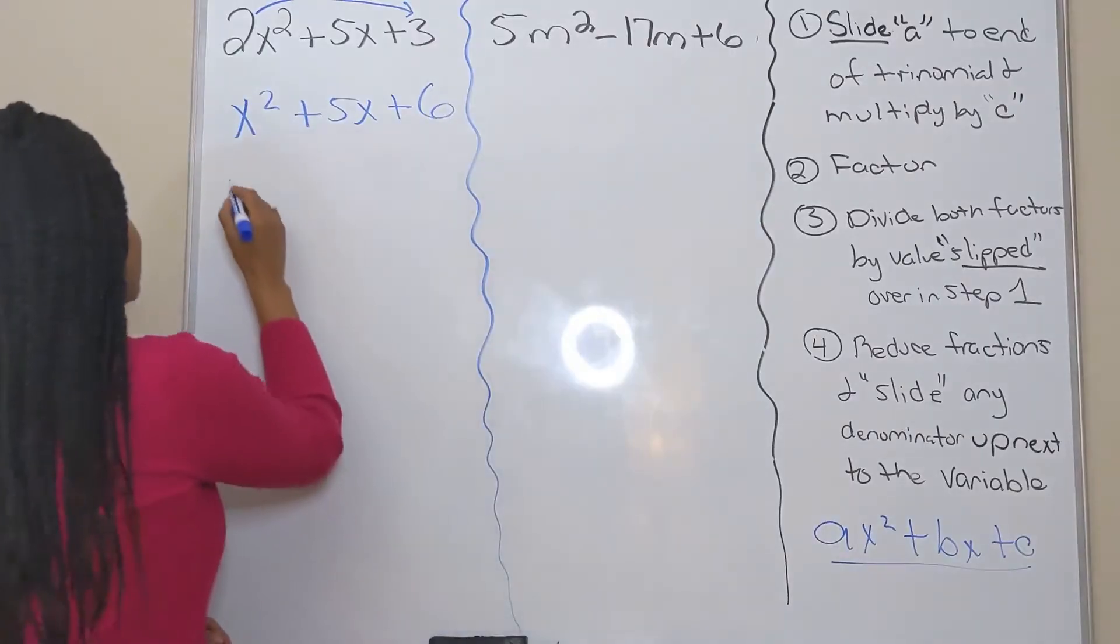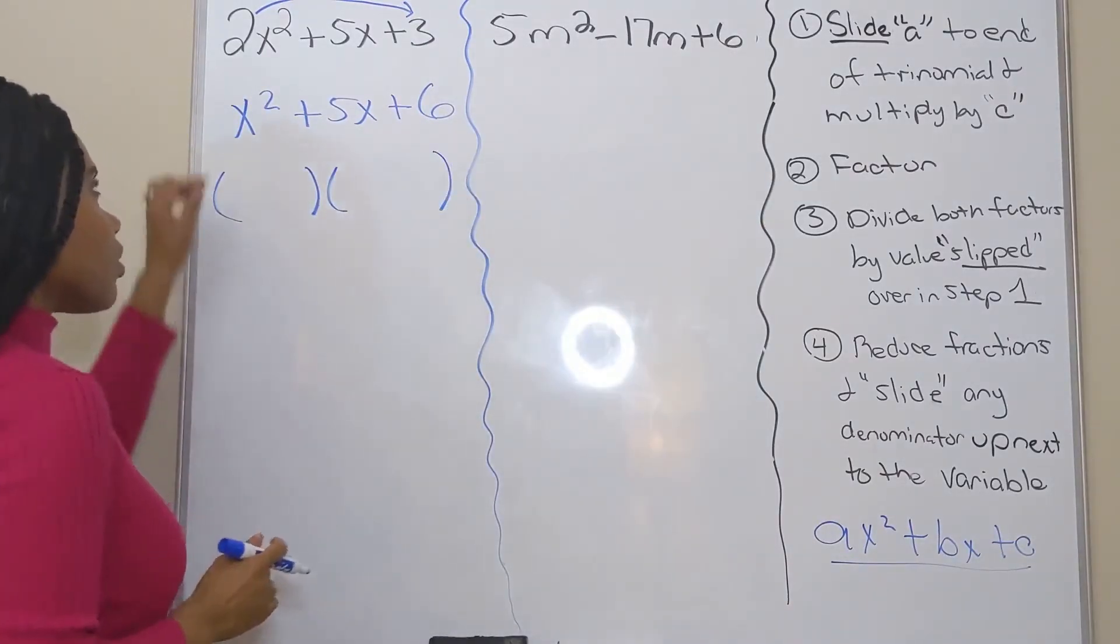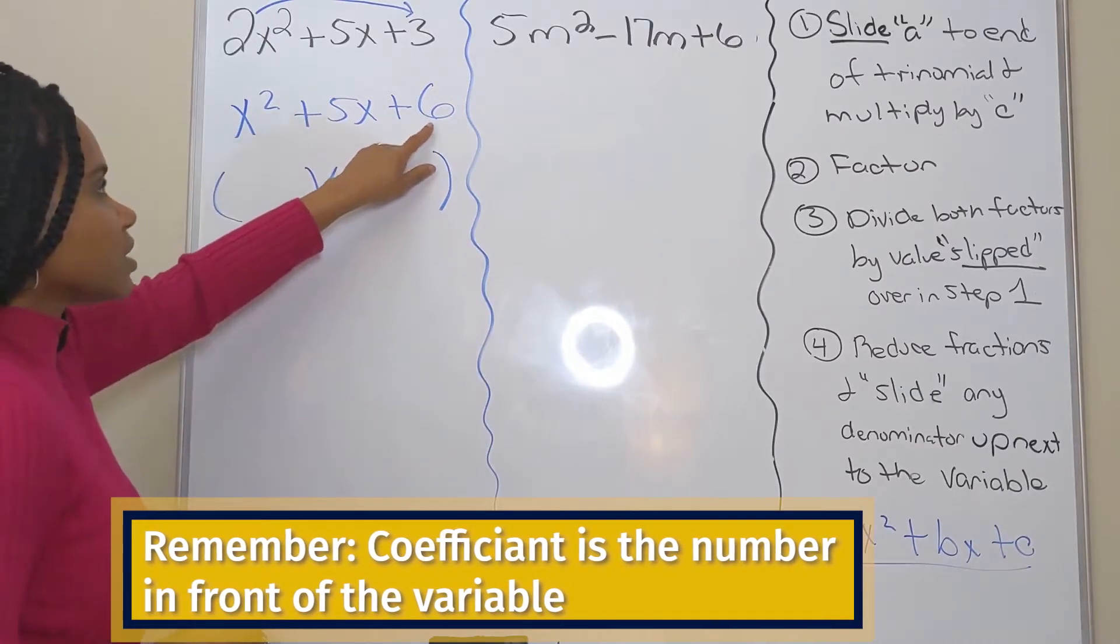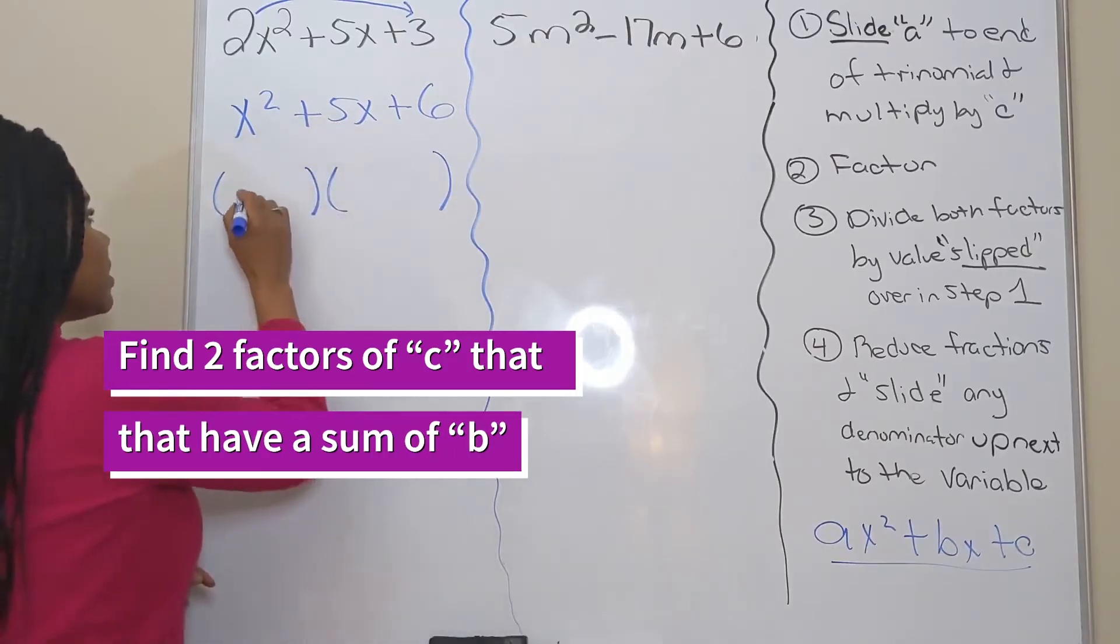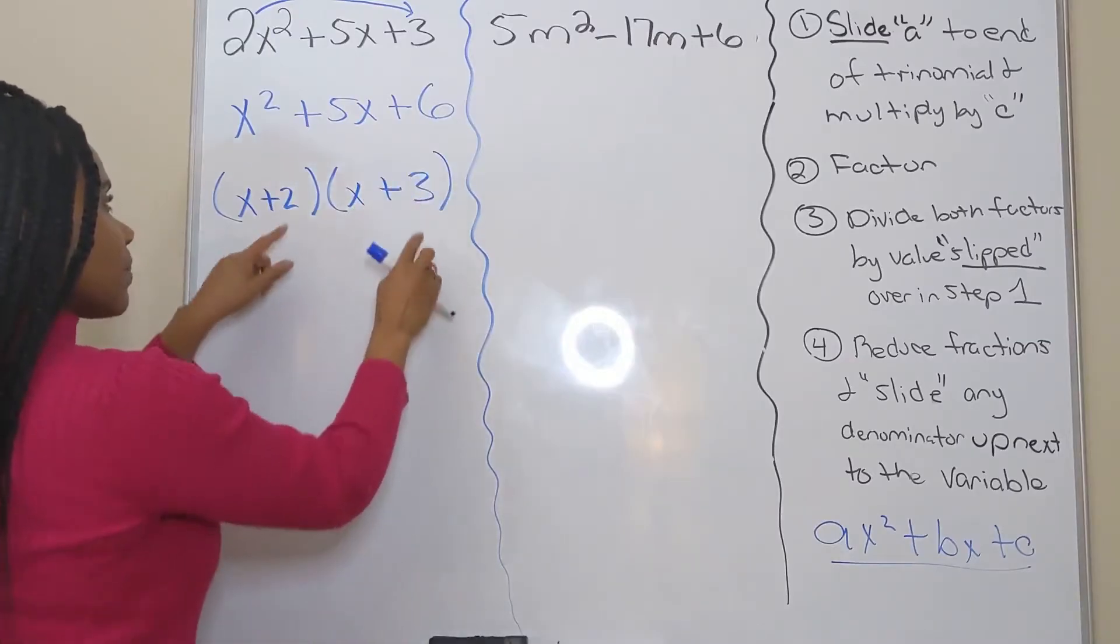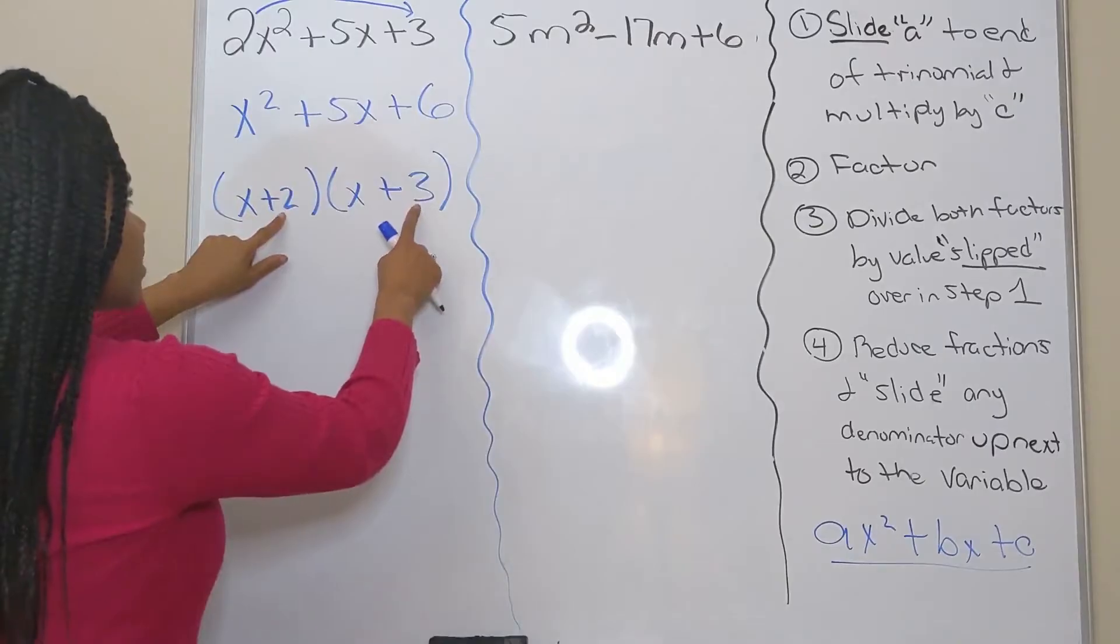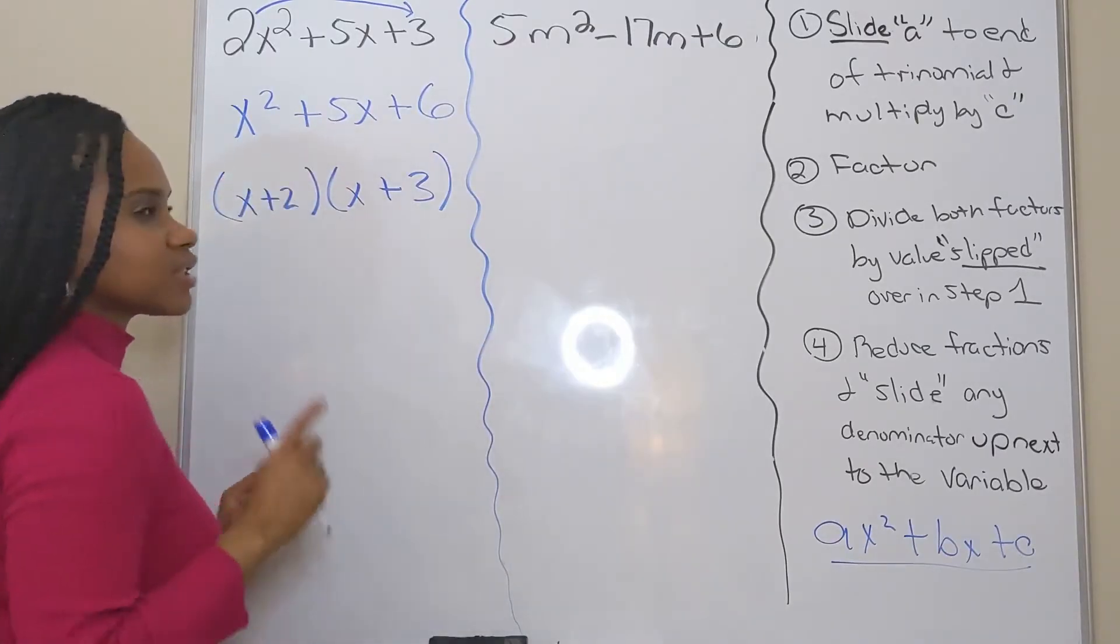Next, I want to factor. So remember to factor expressions that have a coefficient of one here. We just want to find two factors of c that have a sum of b. So two factors of c that have a sum of b are two and three. Because when I multiply two times three, I get six. But when I add two and three, I get five. All right, so I've done step two.